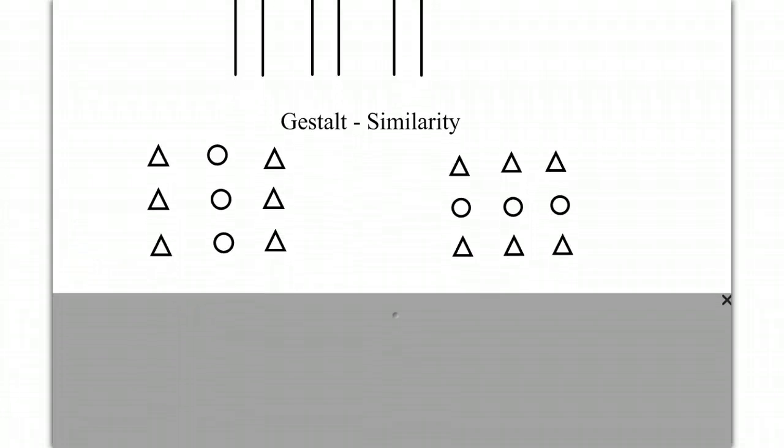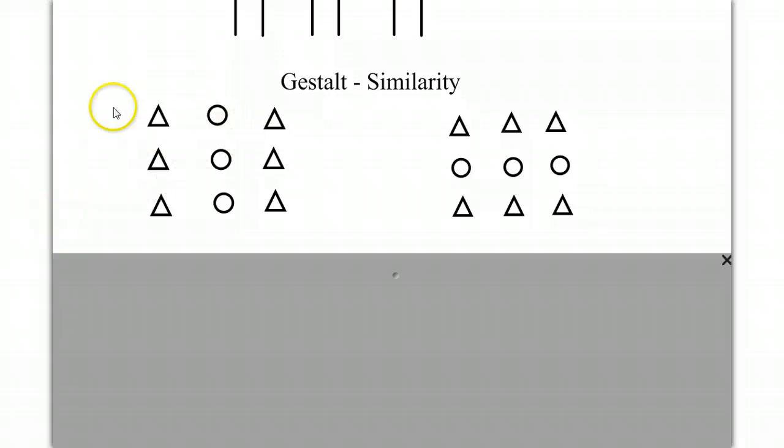How about here? The gestalt concept of similarity. On the left side, do you see vertical columns or horizontal rows? What about over here? Columns or rows? We tend to organize our visual experience based on similarity, so on this side, we'd more likely see columns, and on this side, horizontal rows.